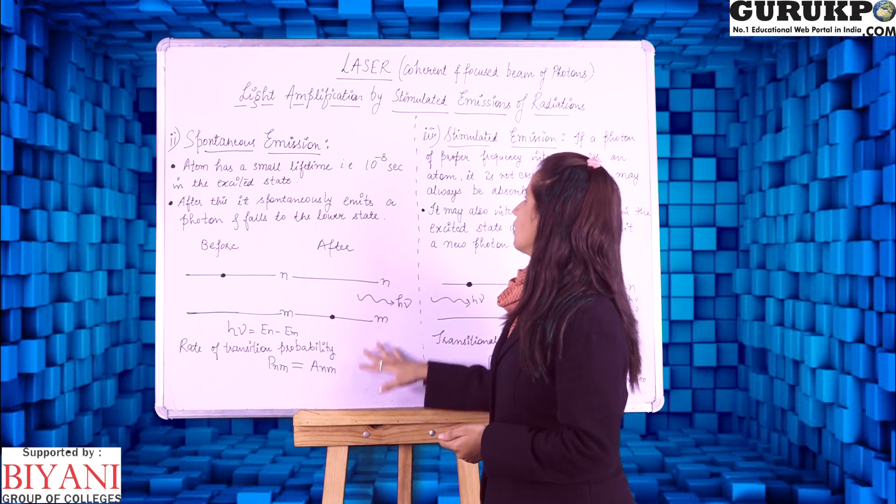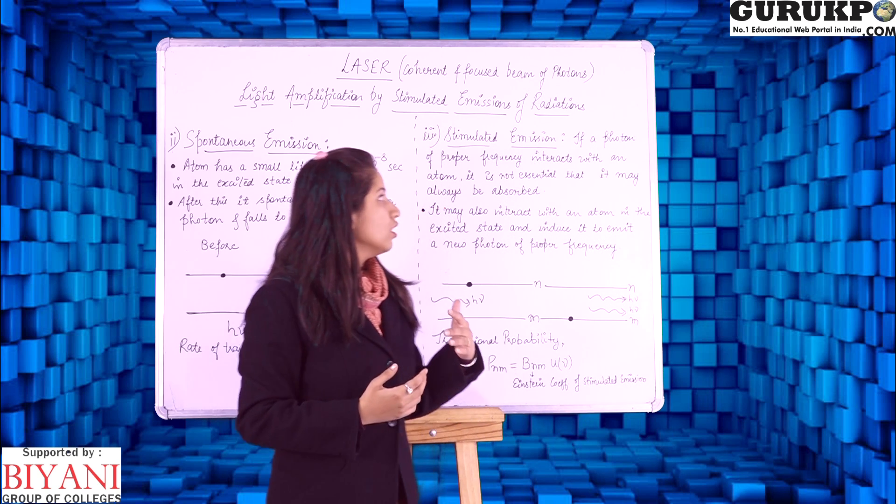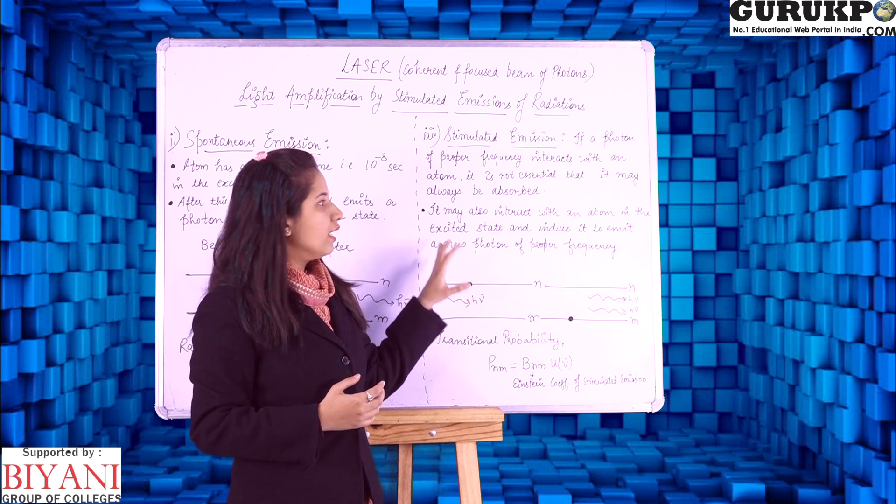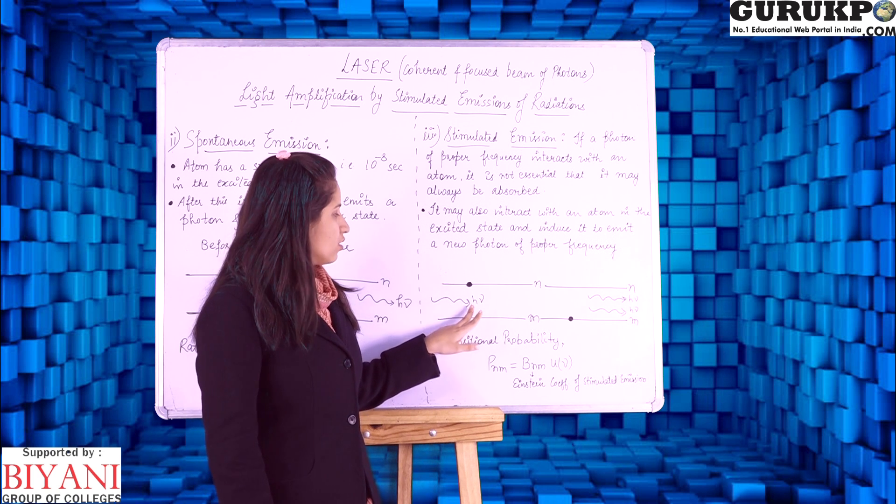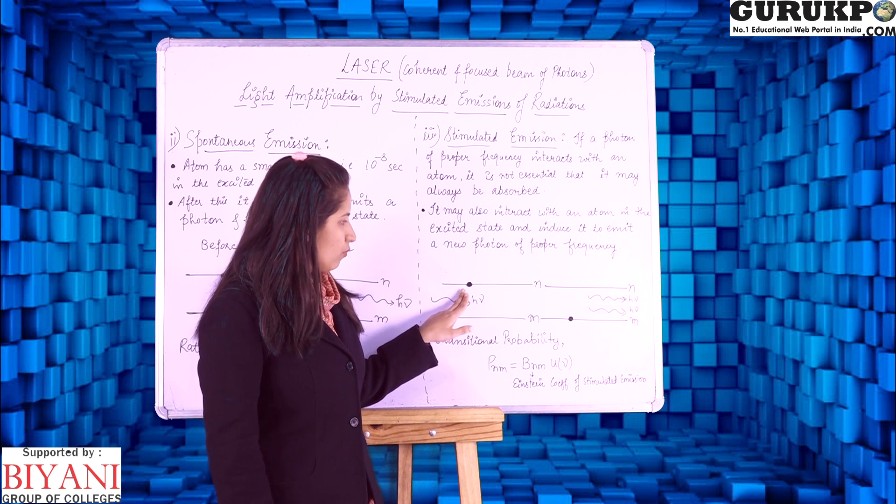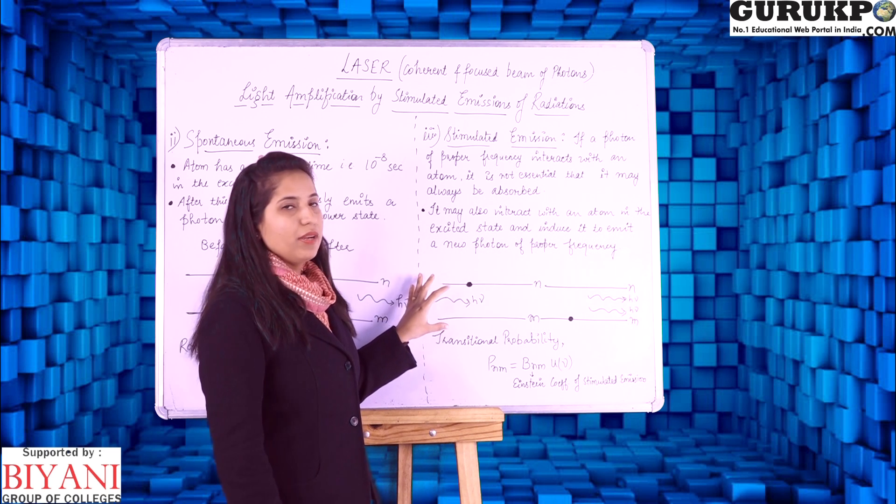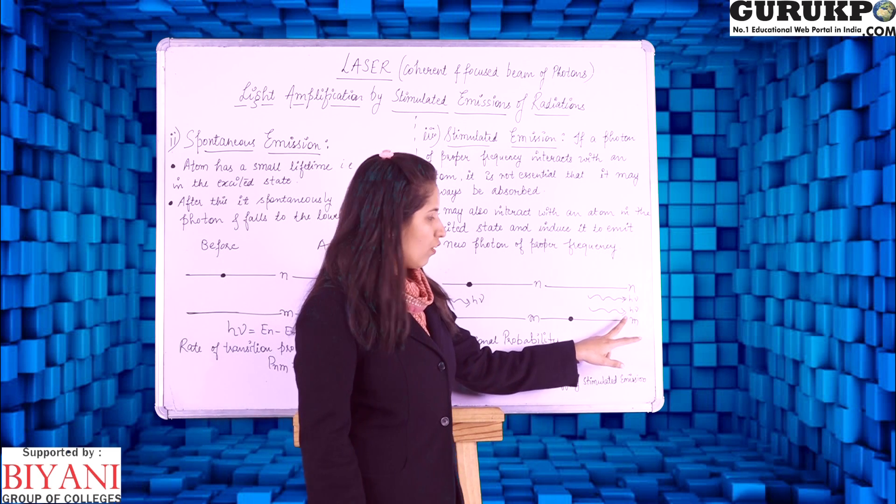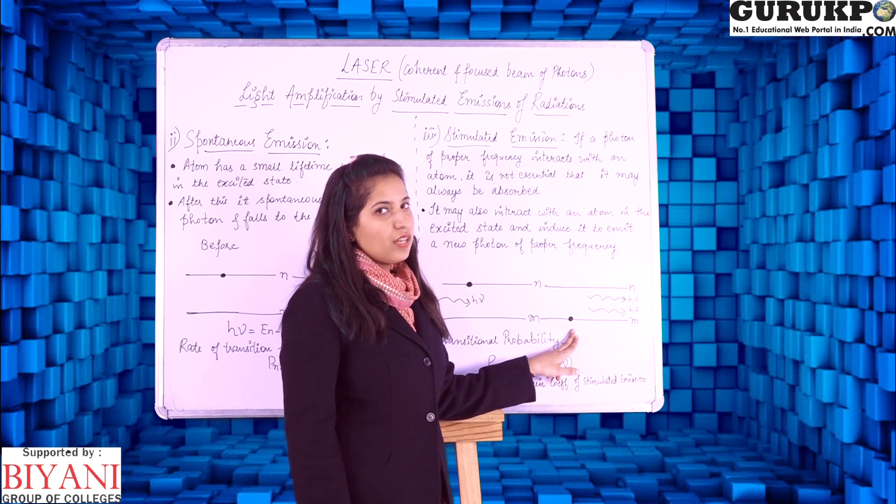Next it is stimulated emission. Stimulated means induced emission. So if a photon of proper frequency interacts with an atom it is not essential that it may always be absorbed. That is if we have a photon it is not always possible that it will absorb with this atom or molecule. It may interact with an atom in the excited state and induce it to emit a new photon of proper frequency. So here it emits a new photon of proper frequency and the atom or molecule it move to the ground state.